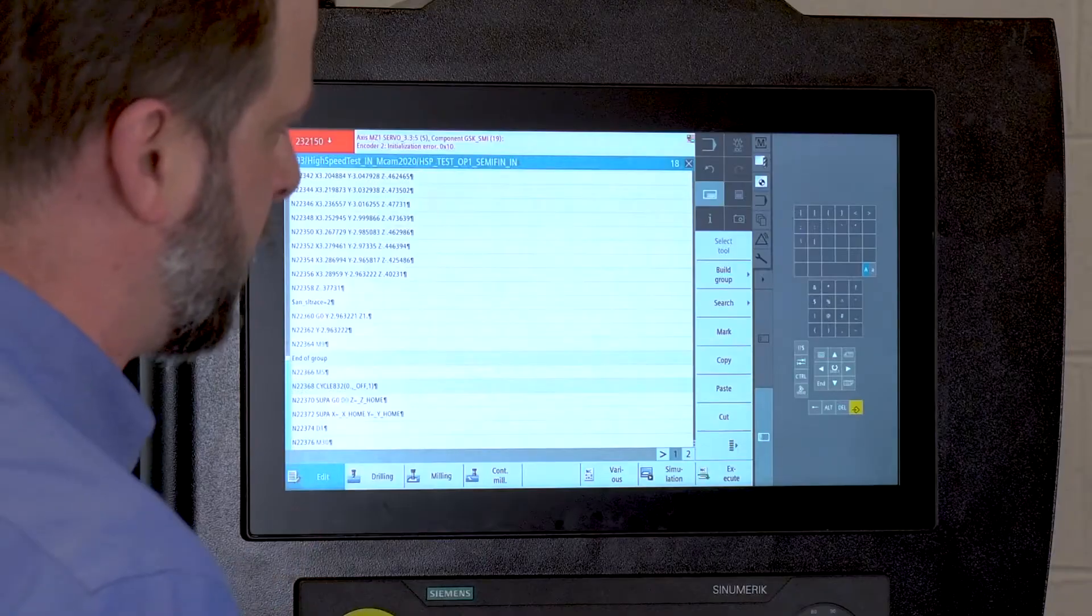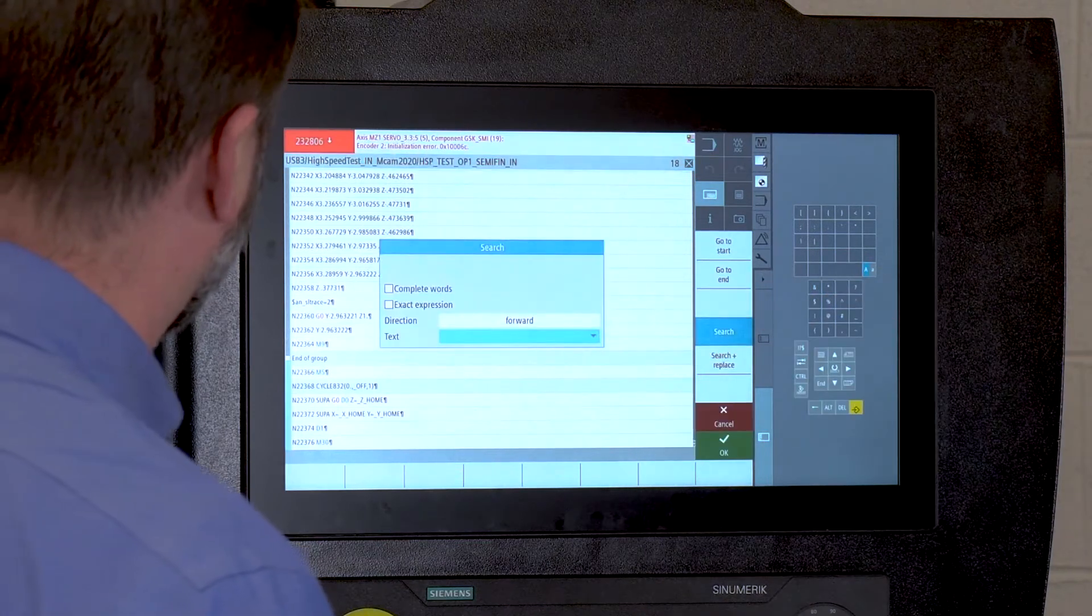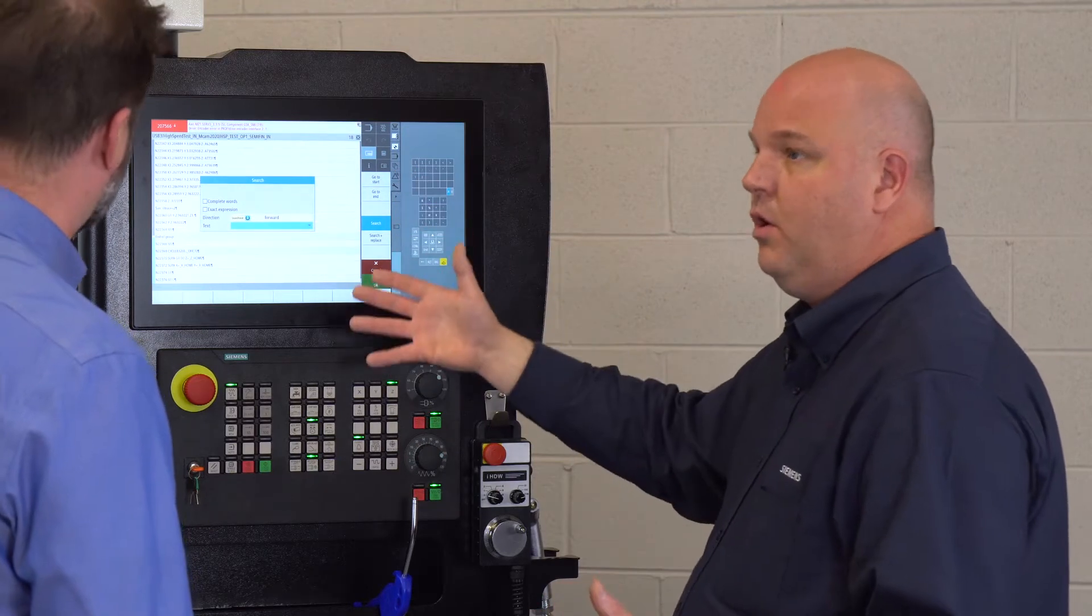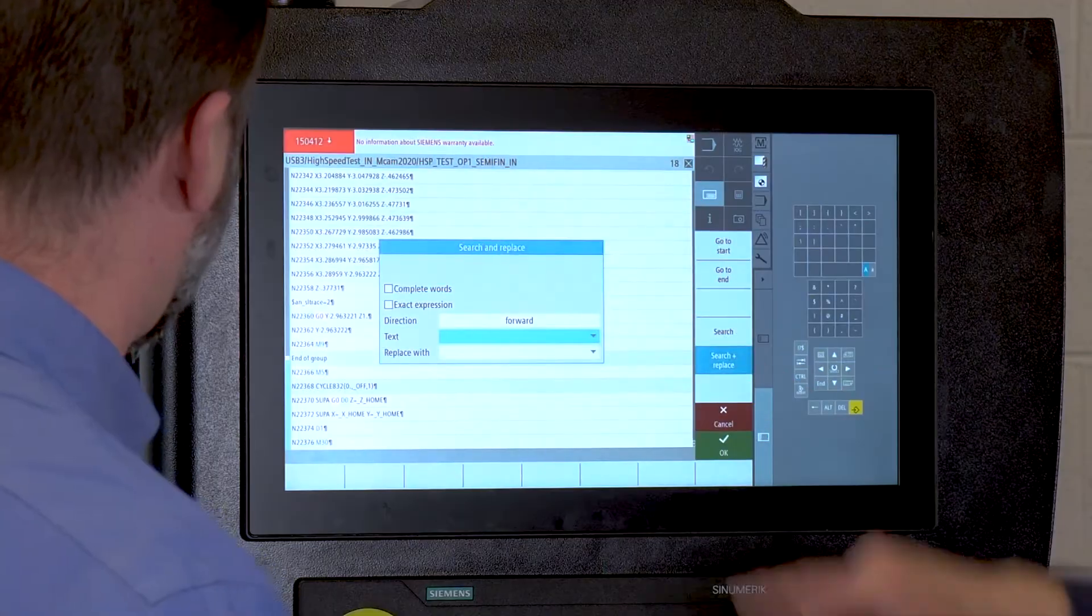And then if I'm looking for specific tool information, I want to jump between all my different tools, check my speeds and feeds. I see a search button right there. Search does two things. It allows me to get to some text or data that I know I want to find. Maybe it's a T or an M code.